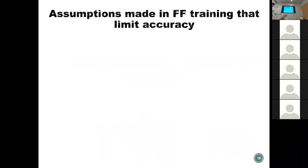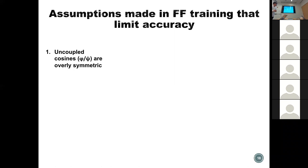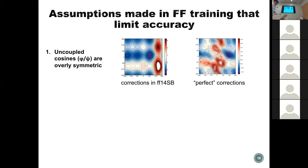That drives us to revisit assumptions made in force field training that might limit accuracy. There are many assumptions in the force field, but a few things that we think are really important: first, we use uncoupled 1D cosine functions for the phi and psi dihedrals, and they are overly symmetric. The current correction in FF14SB on the Ramachandran plot is very symmetric because those are uncoupled 1D functions that don't depend on each other.